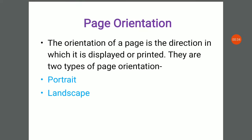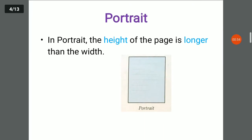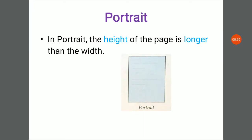Page orientation. The orientation of a page is the direction in which it is displayed or printed. There are two types of page orientation: portrait and landscape. In portrait, the height of the page is longer than the width, as you can see in the picture.